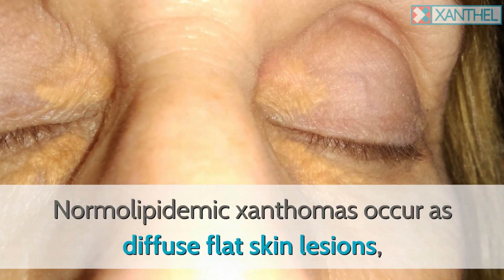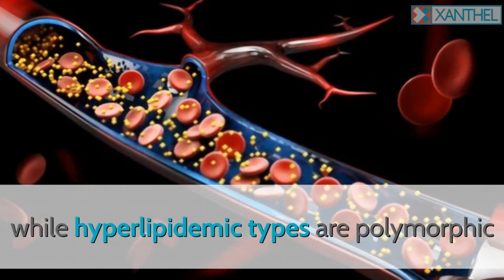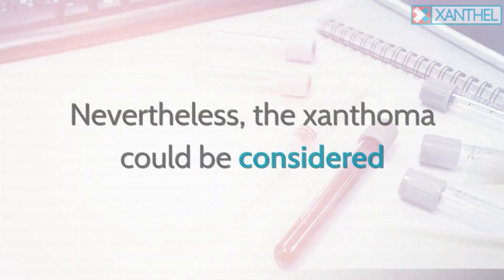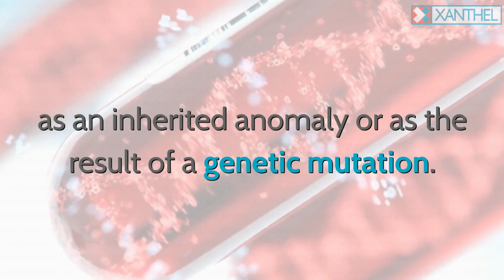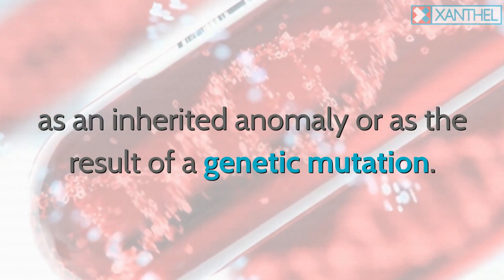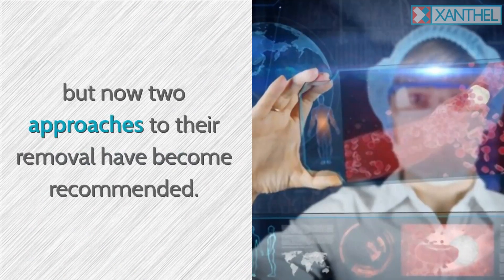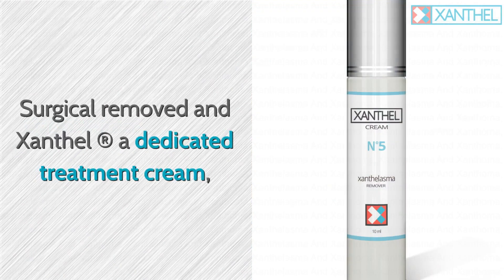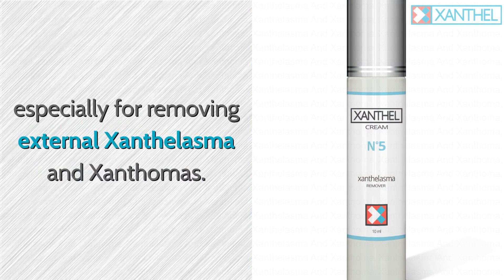Normal lipidemic xanthomas occur as diffuse flat skin lesions, while hyperlipidemic types are polymorphic and often tuberous, and can affect skin, tendons, or joints. Xanthalasma used to be permanent, but now two approaches to their removal have become recommended: surgical removal and a dedicated treatment cream especially formulated for removing external xanthalasma and xanthomas.